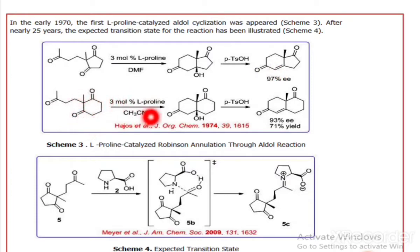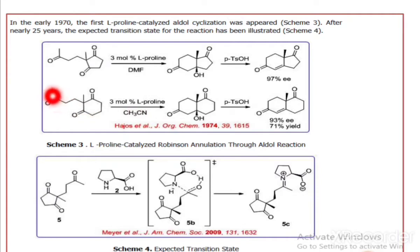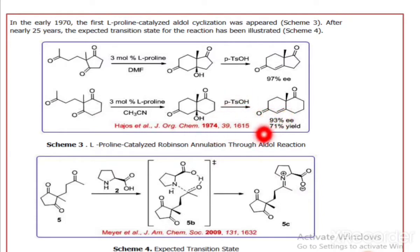In the second example, the same proportion is used but with a different solvent. The mechanism is the same: the ketone is converted to the enol form, which attacks the carbonyl to give an OH, and in the next step, removal of the water molecule with p-toluenesulfonic acid gives the alpha-beta unsaturated system again, this time with 93% enantiomeric excess. In both examples, this is Robinson annulation through the aldol reaction.